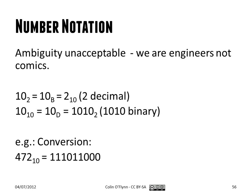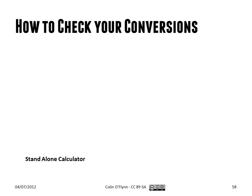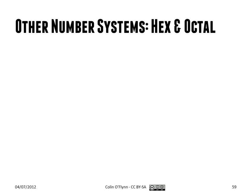We'll use a subscript to indicate the base of the number. For example, 10 subscript 2 means binary 1, 0 — not decimal ten. So binary 10 is equal to 2 in decimal (base 10). You may also see a subscript 'd' to indicate decimal or subscript 'b' to indicate binary. You can check your conversions using Windows Calculator or any calculator that supports it.